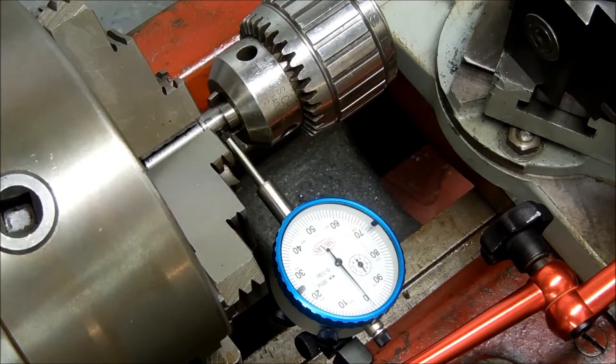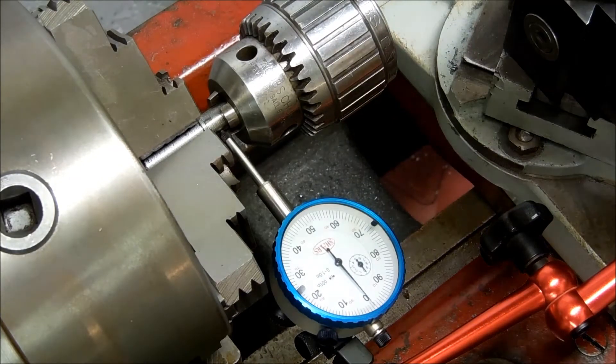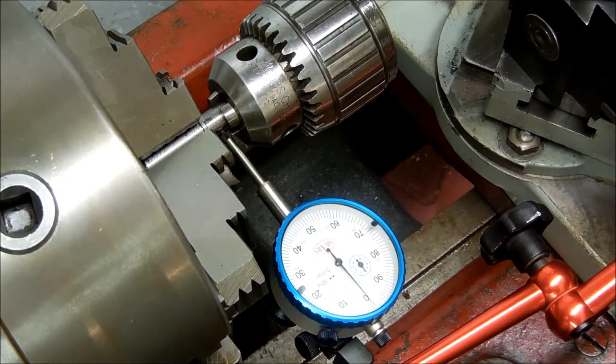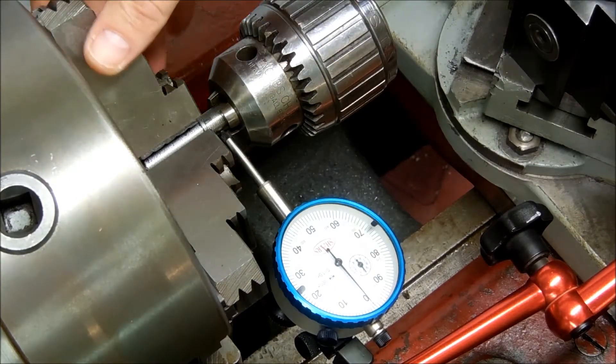But that's not the only problem. I'm finding I have runout, or more runout in my chuck than I thought I had. I thought I had about four thousandths, and it looks like I'm getting more than that.